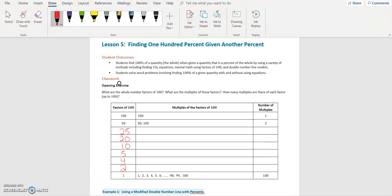And then we want the multiples, so we're going to be counting by those numbers. So 50 and 100, 25 has 25, 50, 75, 100. Twenty: 20, 40, 60, 80, and 100. We're going to be counting by 10: 10, 20, 30, 40, 50, 60, 70, 80, 90, and 100.